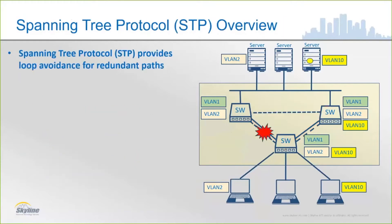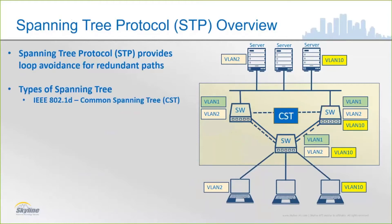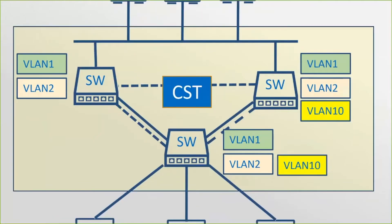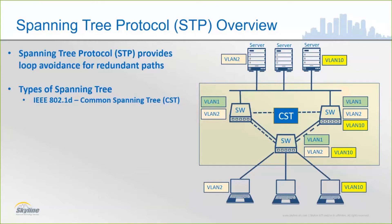Spanning Tree is the thing that actually provides that loop avoidance mechanism, and it does this in a couple of different ways. There are several kinds of Spanning Tree Protocol — some that are Cisco proprietary and some that are standards-based. The original Spanning Tree Protocol was published back in 1990, also known as Common Spanning Tree, meaning one spanning tree instance for all configured switches and VLANs. That was called Common Spanning Tree or 802.1d.